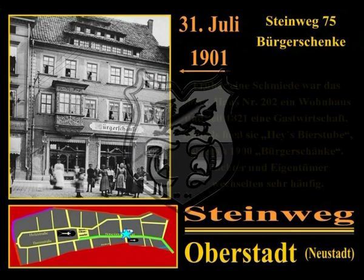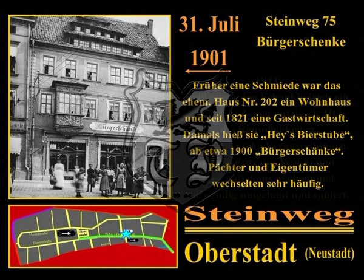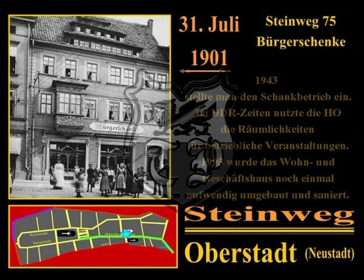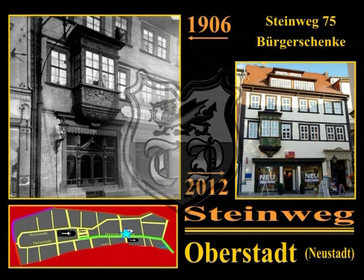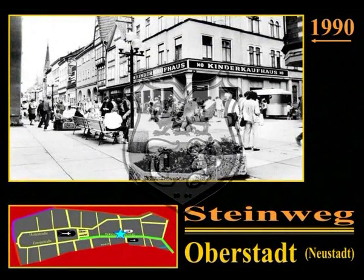Zweifellos ist die ehemalige Bürgerschenke am Steinweg 75 das Gebäude in Mühlhausen mit dem schönsten und bekanntesten Erker der Stadt. Früher eine Schmiede, war das ehemalige Haus Nr. 202 ein Wohnhaus und seit 1821 eine Gastwirtschaft – damals hieß sie Heiß-Bierstube, ab etwa 1900 Bürgerschenke. Pächter und Eigentümer wechselten sehr häufig; 1943 stellte man den Schankbetrieb ein. Zu DDR-Zeiten nutzte die HU die Räumlichkeiten für betriebliche Veranstaltungen; 1993 wurde das Wohn- und Geschäftshaus noch einmal aufwendig umgebaut und saniert. Hier verlassen wir den Untersteinweg, der an der Einmündung Stätte bzw. Brückenstraße endet.